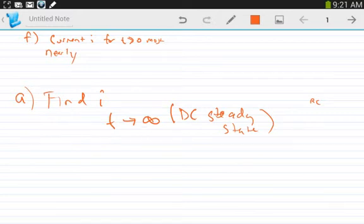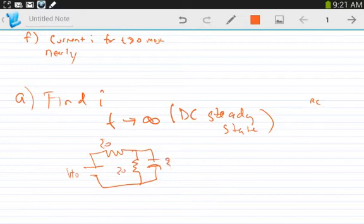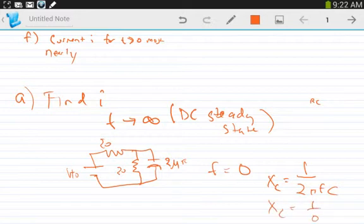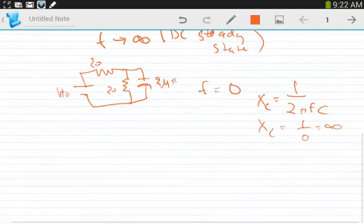In DC, this circuit is 40V, 20Ω, 20Ω, 2 microfarads. DC frequency can be approximated at zero. Converting the capacitor value to reactance: 1 over 2πFC. FC is 1 over zero, which equals infinity. Infinite resistance is equivalent to an open circuit.